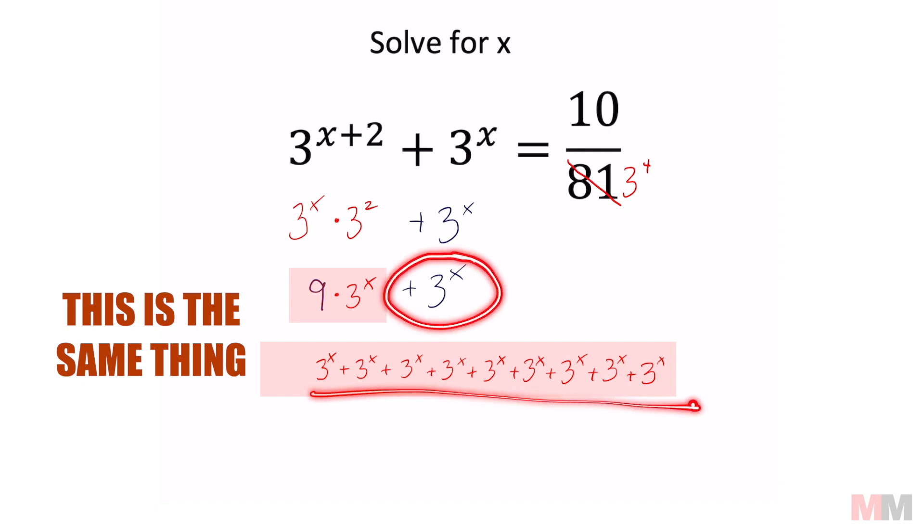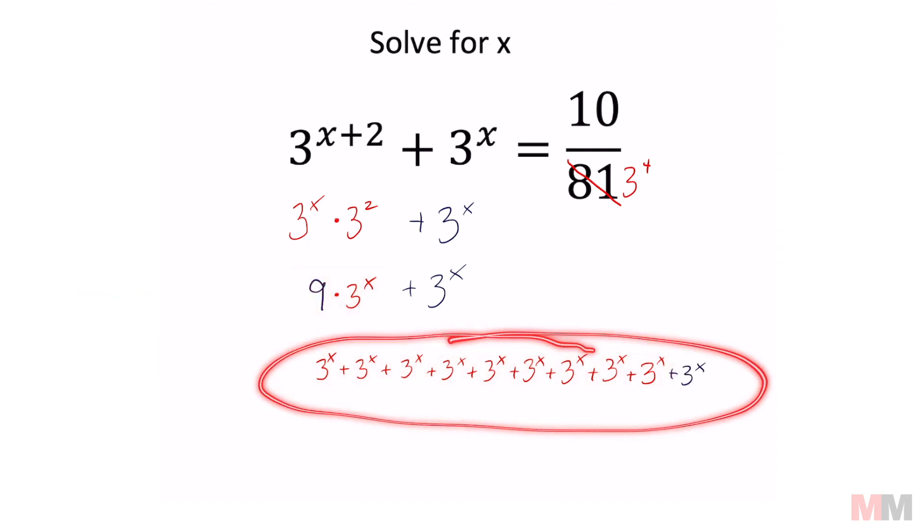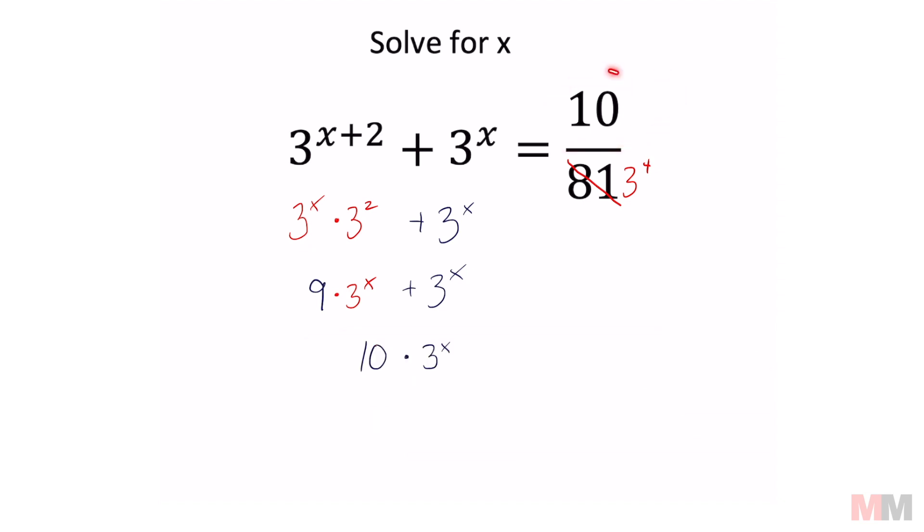So if we add another 3 to the x power, then all of this is the same as 10 times 3 to the x. And you can kind of see where this 10 is coming from.